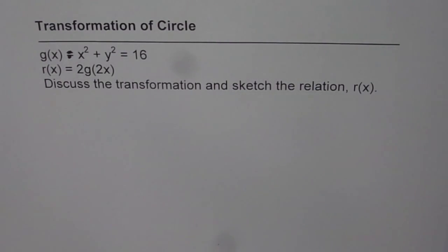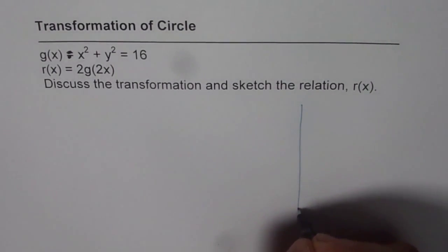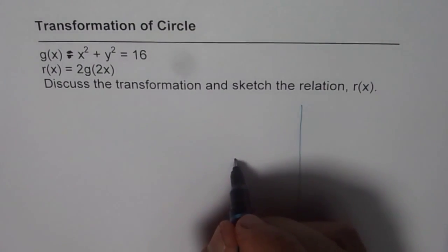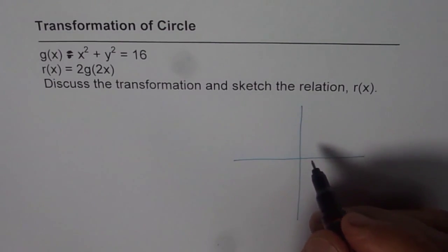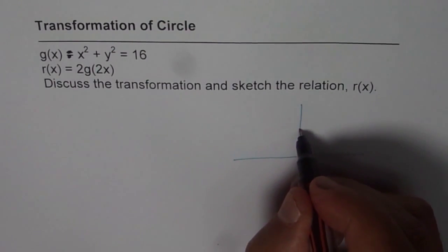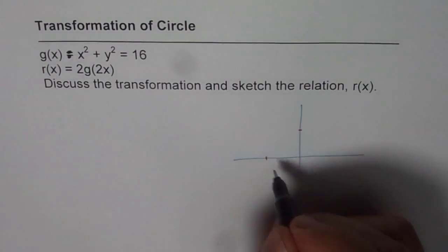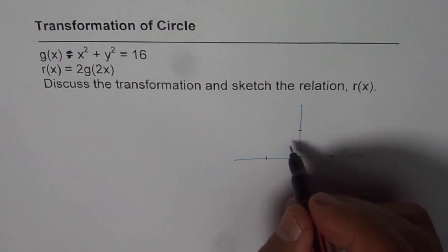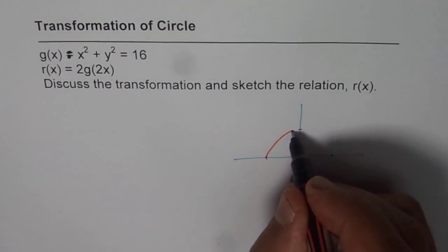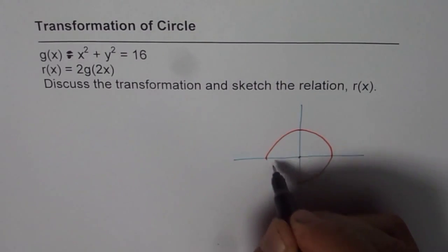So let us first sketch g of x which is a circle, x square plus y square equals to 16. That is a circle with radius of 4 units. It is x square plus y square equals to 4 square. So g of x is actually not a function, just a relation where every point is equidistant from the center and it is 4 units away. So that forms a circle.